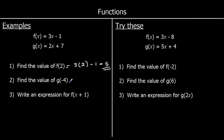The second question, we're putting negative 4 into the g function. So we're replacing x with negative 4. So 2 times negative 4 plus 7. 2 times negative 4 is negative 8, plus 7 is negative 1.